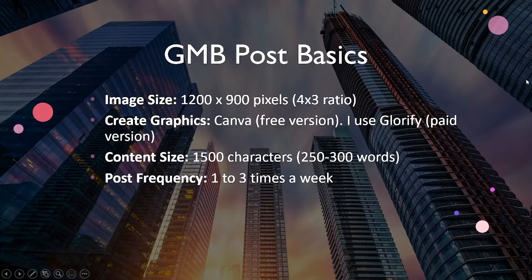Let's look at some GMB post basics. First, we'll start with the image size. A good image size is 1200 by 900 pixels — that's a 4 to 3 ratio. You can post images smaller than that, but not too much larger. I've been able to post about 1280 pixels wide, but 1200 by 900 is a safe starting point.